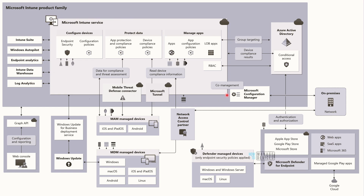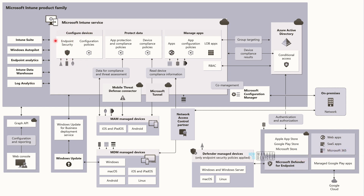Now let's look into the internals of Microsoft Intune service, starting from the left. The first section is 'Configure Devices' — there are two boxes: endpoint security policies and configuration policies. Most of these are SaaS solutions, with Intune service being a pure SaaS solution. Configuring devices uses endpoint security and configuration policies, settings catalog, endpoint security policies, security baselines, and Defender policies — everything comes under this section.